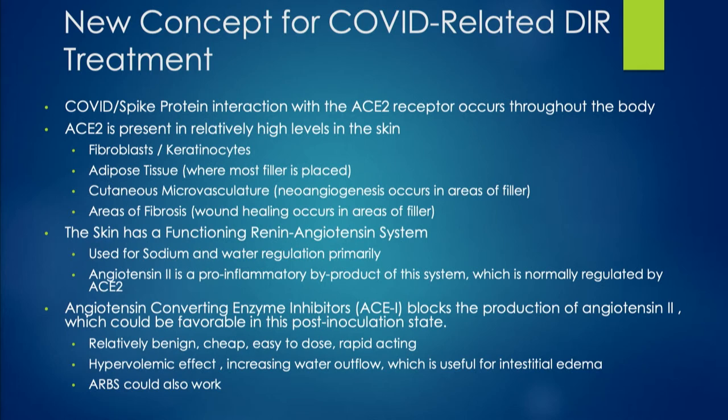Angiotensin II is a pro-inflammatory byproduct which is normally regulated by the ACE2 receptor. The ACE2 receptor can be soluble, cytosolic, in the soft tissue, and it can be membrane-bound.